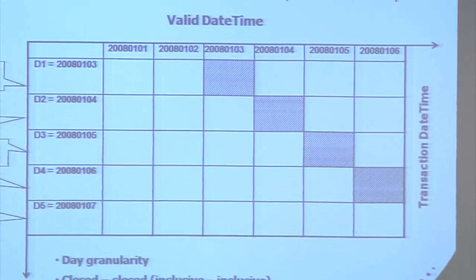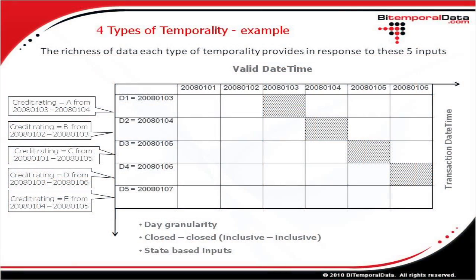They say a picture is worth 1,000 words — I think an example is worth 1,000 words. So we're going to go into a detailed example to get really grounded in these different types of temporality. We're going to walk through five events, shown on the left-hand side of the slide, which are five different changes to a company's credit rating. The x-axis is the valid dimension of time and the y-axis is the transaction dimension of time. We'll show how processing these five events fills up this matrix with data and see the richness that different types of temporality provide.